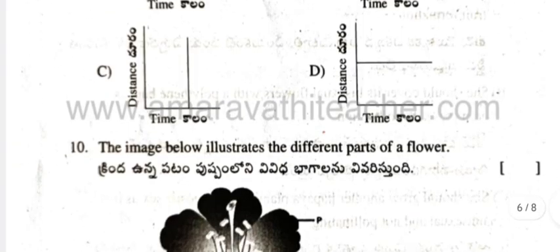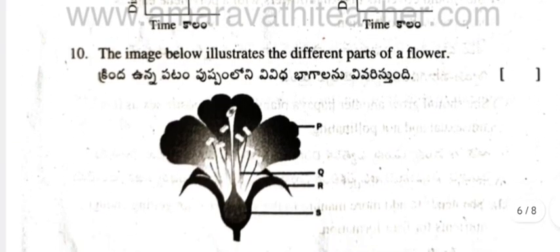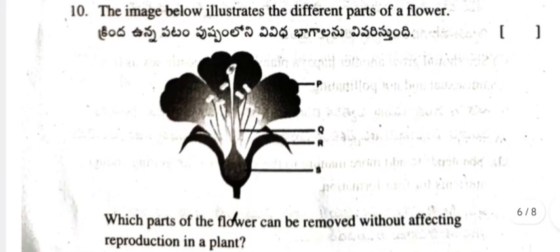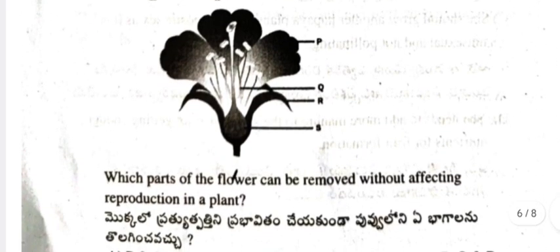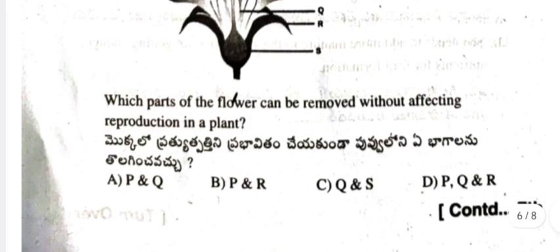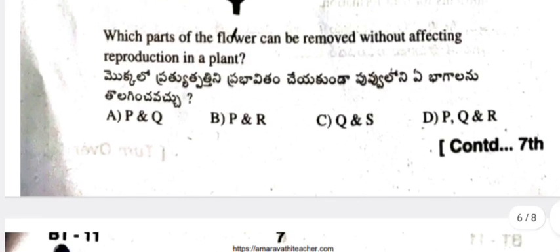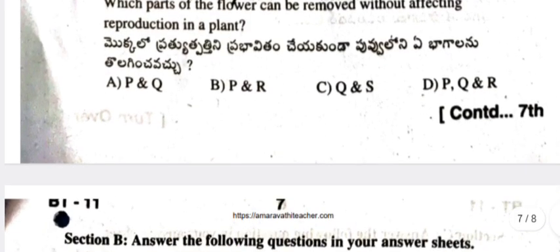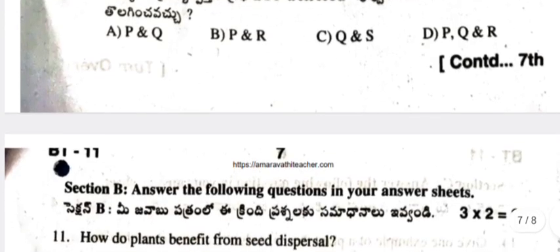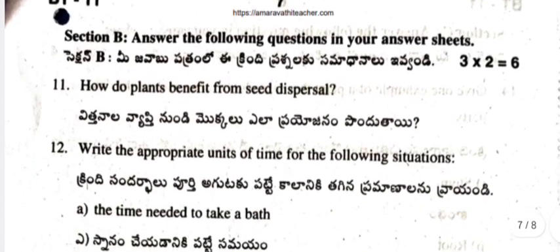Question 10: Which of the following graphs represents the time that the rabbit spent sleeping? Question 11 (figure-based): The image below illustrates the different parts of a flower. Which part of the flower can be removed without affecting reproduction in the plant? (a) P and Q, (b) P and R, (c) Q and S, (d) P, Q and R.